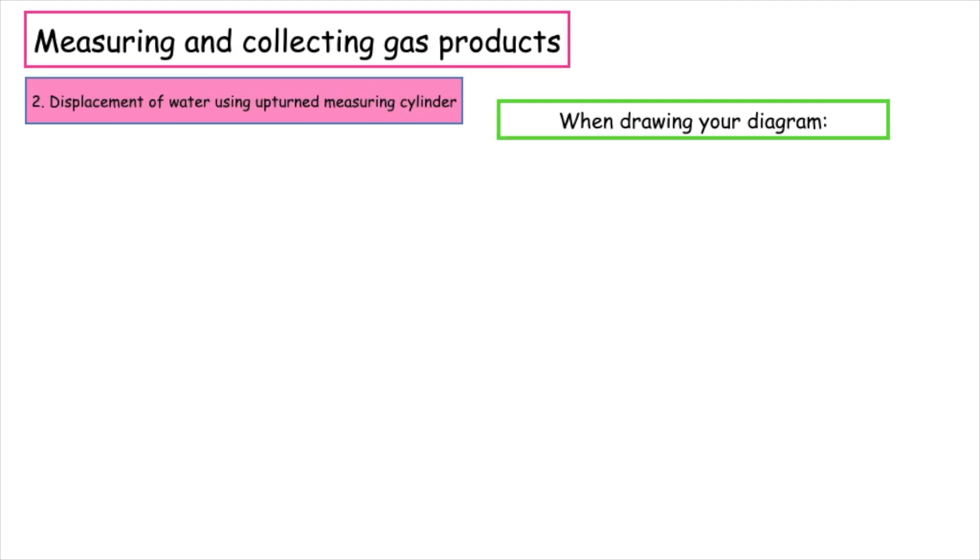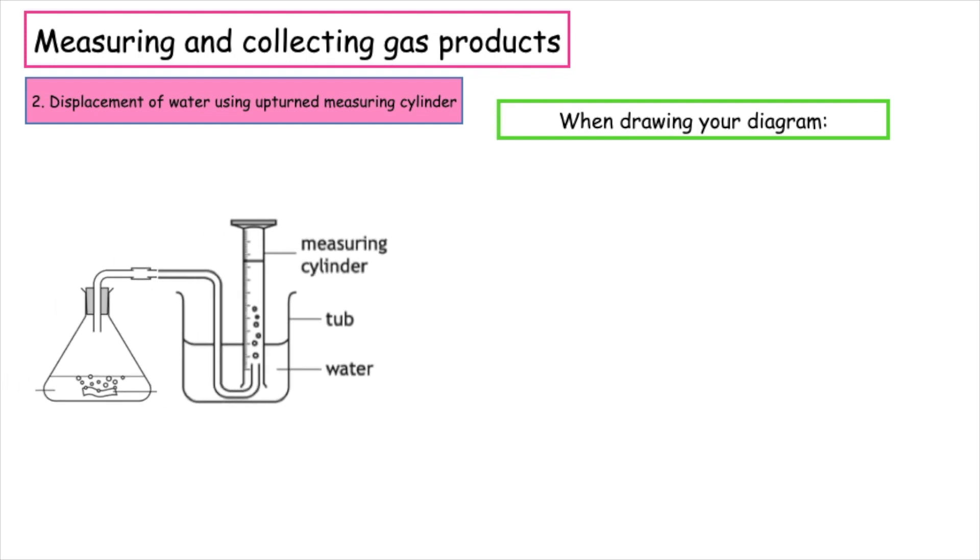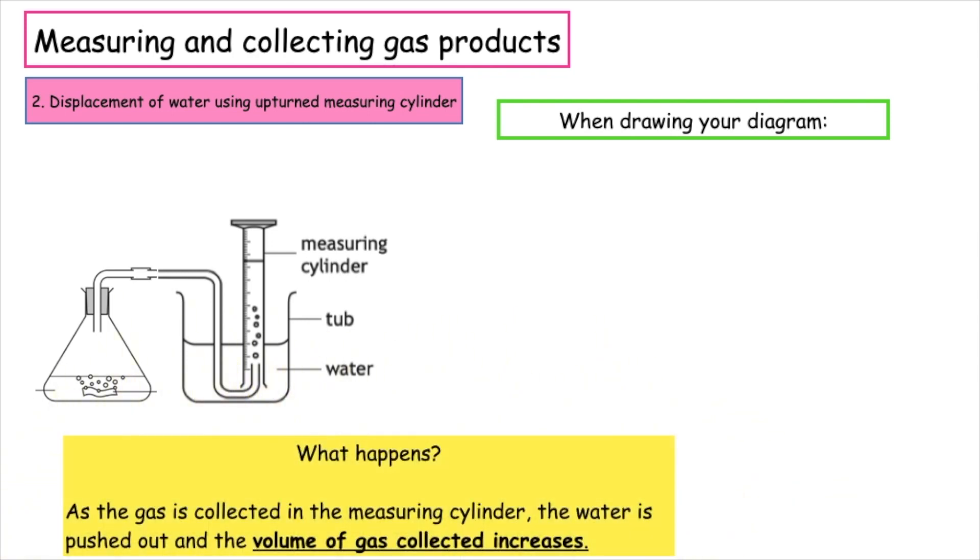The second method for measuring and collecting gas products is using the displacement of water using an upturned measuring cylinder. As the gas is collected in the measuring cylinder, the water is pushed out and the volume of gas collected increases.